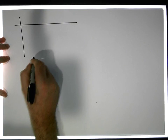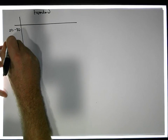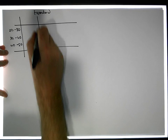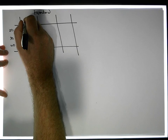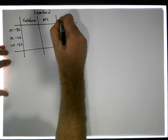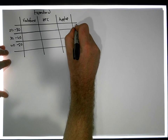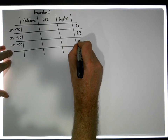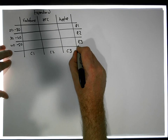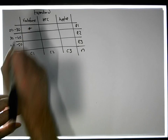Let's set up our expected frequencies. We have our age categories: 20 to 30, 30 to 40, and 40 to 50. And we have our phone categories: Vodafone, HTC, and Apple. We're building a contingency table with row totals, column totals, and the total number of observations, which is our sample size.